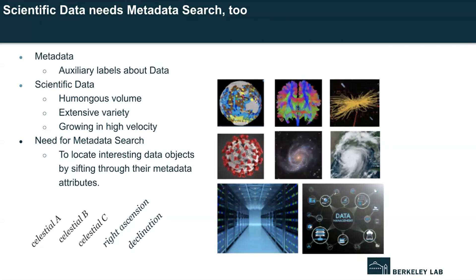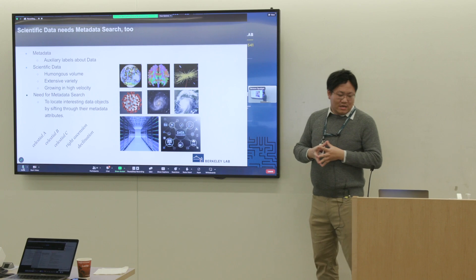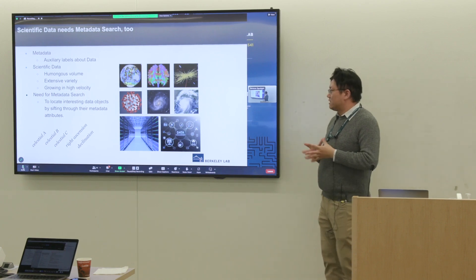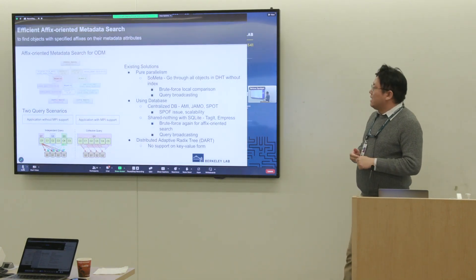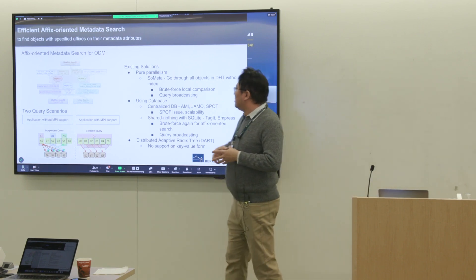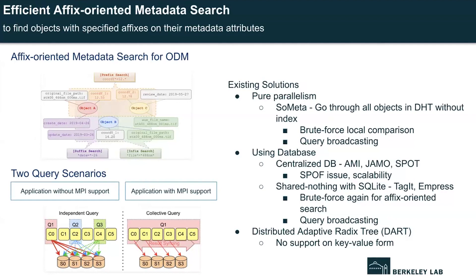For example, a scientist may be interested in finding celestial objects of different types and looking for those objects in a particular sky region. In most cases, metadata attributes on these data objects are stored as key-value pairs, and queries against them are in the form of affix-oriented metadata searches where prefix, infix, and suffix can be involved.